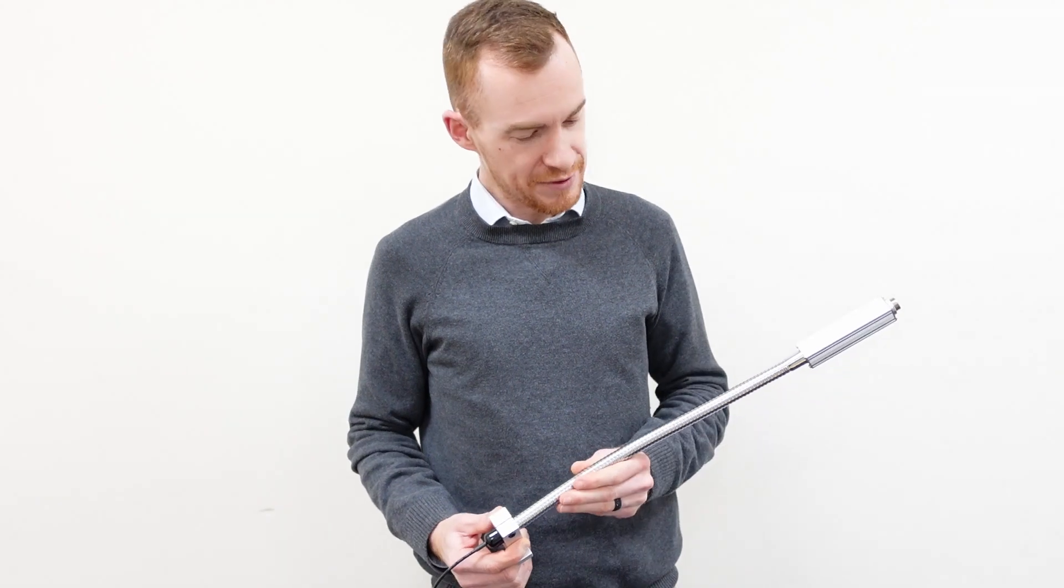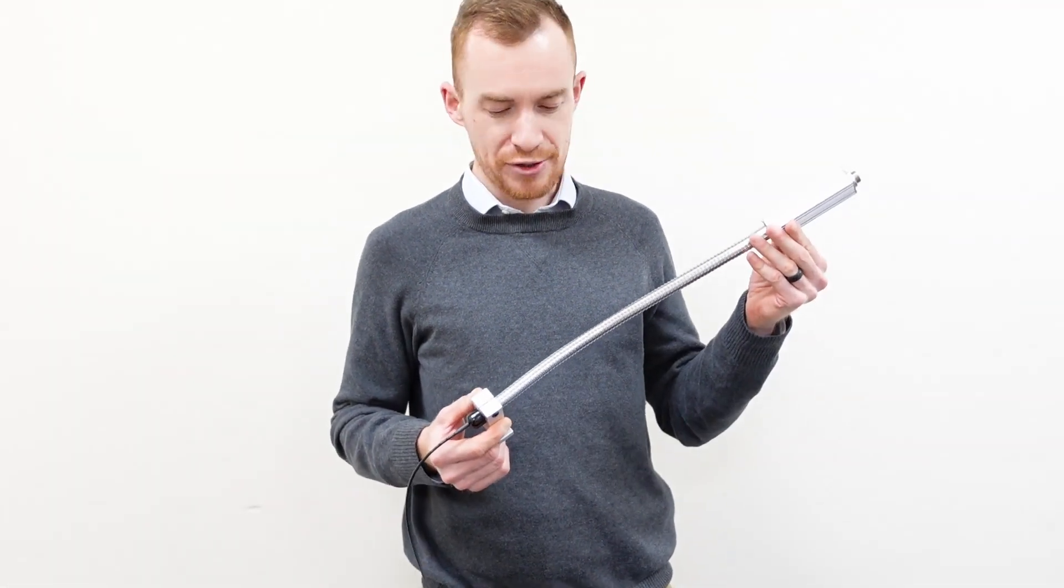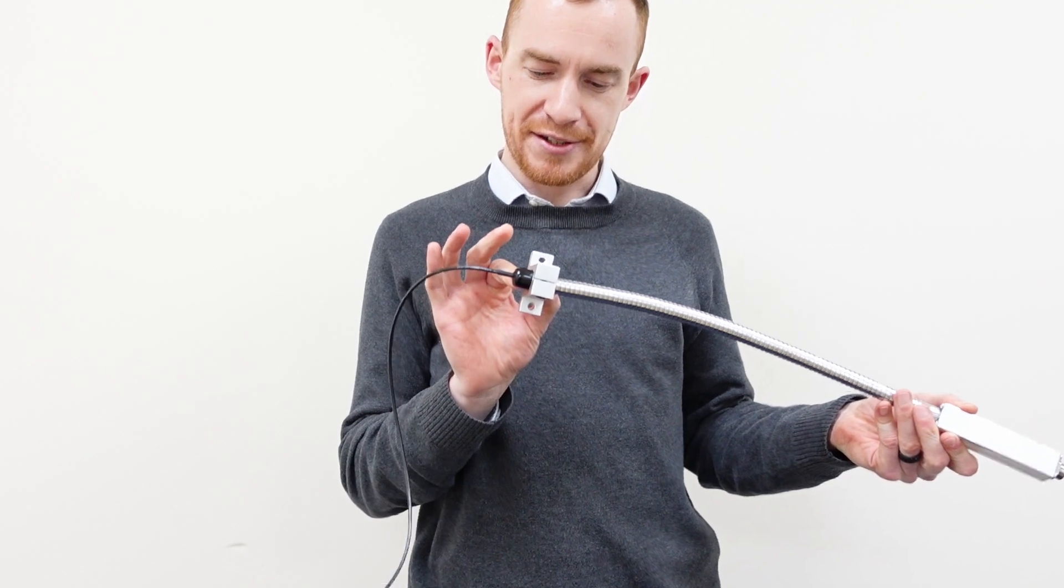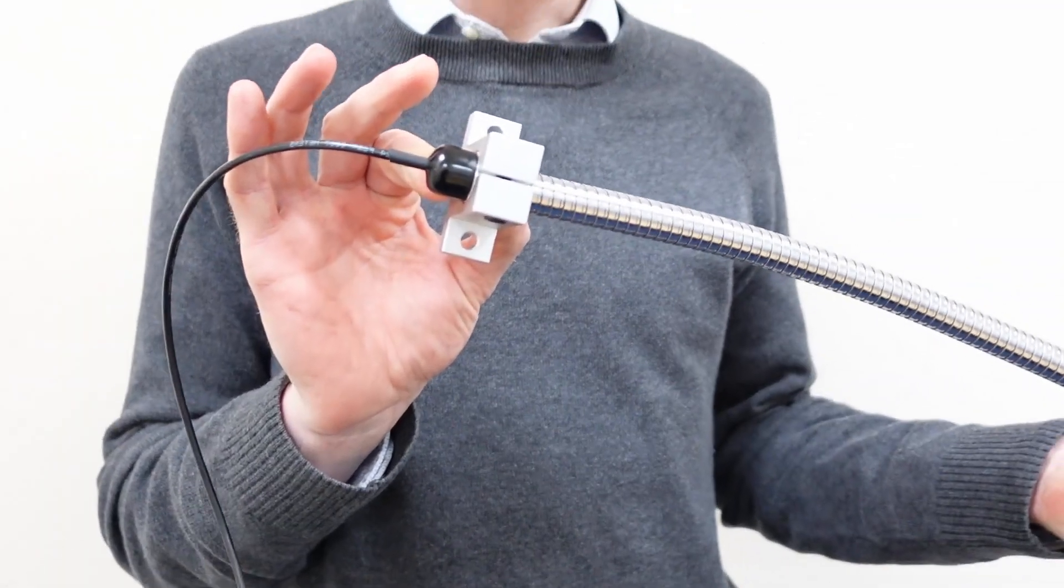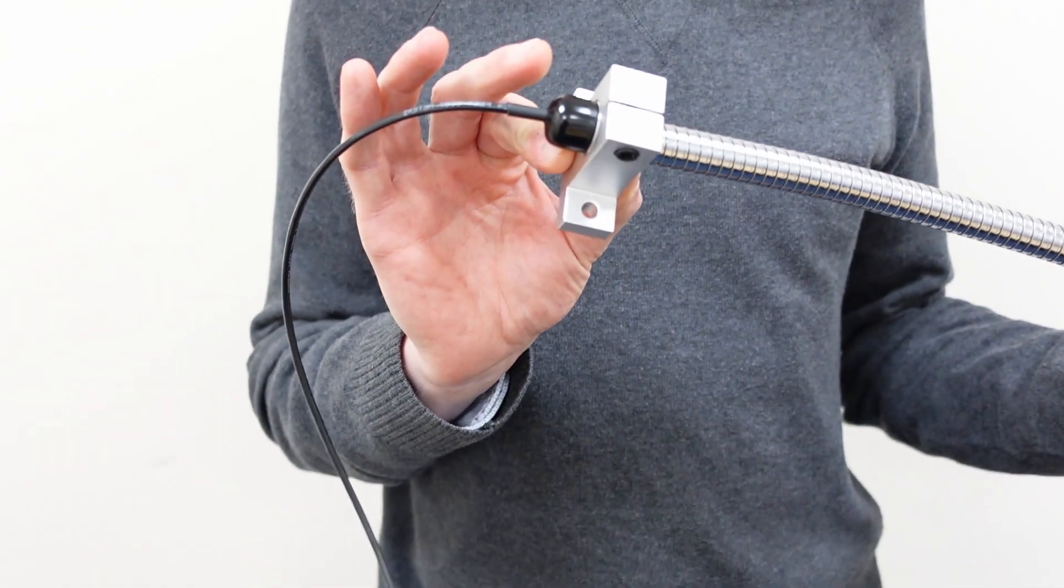We have a 16mm steel gooseneck and a very robust aluminum mounting block with two holes in it to mount that onto a machine.